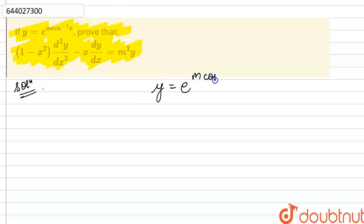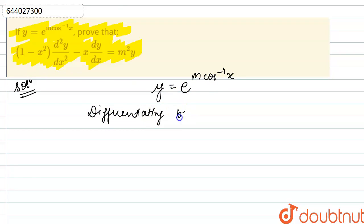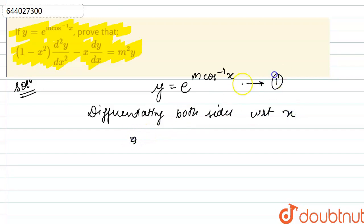We have y equals e raised to the power m into cos inverse x. We will differentiate both sides with respect to x. Let us call this equation 1.